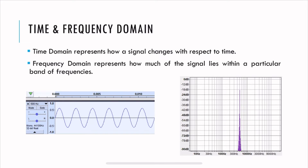Time domain represents how a signal changes with respect to time. On the left you see an example: the x-axis is time and the y-axis represents how the signal is changing with respect to time. Frequency domain on the right represents how much of the signal lies within a particular band of frequencies — it tells you what the signal is made up of. For example, a 500 Hz sine wave in the time domain is reflected in the frequency domain by a line at 500 Hz.